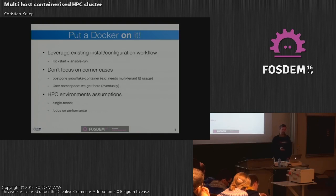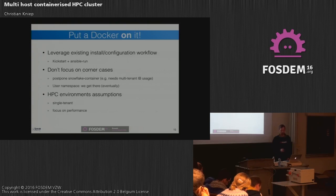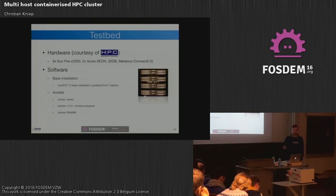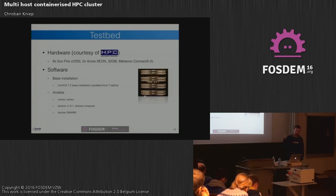The HPC environment assumptions — it's single-tenant for me and the focus is on performance, so I don't care about security yet so much. Docker is moving forward so fast that what I think hard about today might be irrelevant in half a year anyway. The setup: I had eight nodes from the HPC Advisory Council to access. It's a fairly old system — eight nodes with Xeon, 32 gigs, and QDR InfiniBand. I use CentOS 7.2, updated from the previously mentioned 7 alpha. To install all the dependencies in my stack I use Ansible playbooks. I first install Consul as a service, and after Consul starts, the Docker engine can start because it has to hook into the Consul cluster.